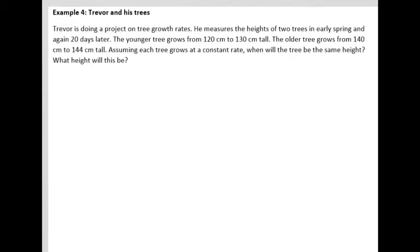You can get a sense of which tree is growing faster - the younger tree gains 10 centimeters over 20 days while the older tree gains 4 centimeters, so it's growing slower. Assuming each tree grows at a constant rate, when will those two trees be the same height?